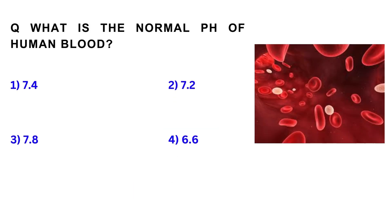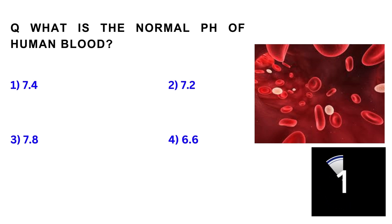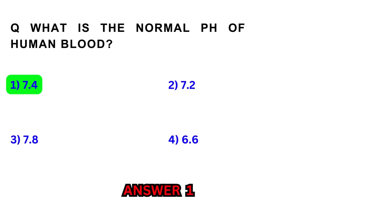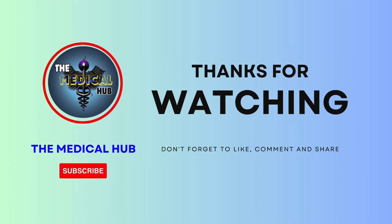What is the normal pH of human blood? 7.4. Thanks for watching. Don't forget to like, comment and share.